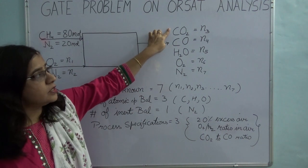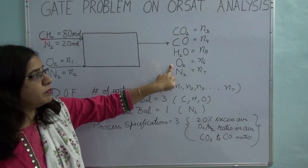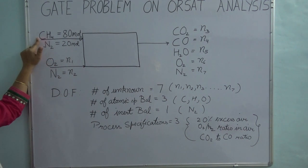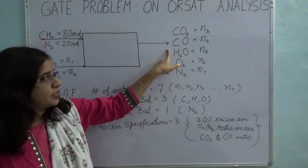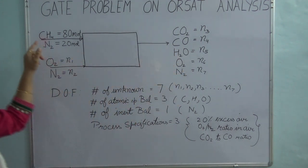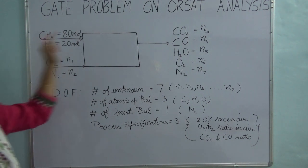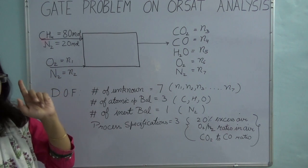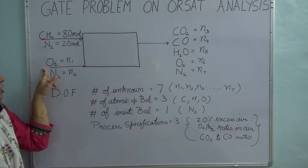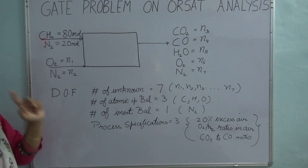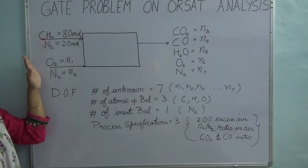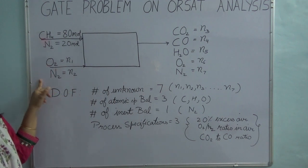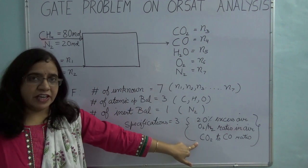The products of combustion are CO2, CO, H2O, and then unburnt oxygen and nitrogen. So methane is burning to give carbon dioxide as well as carbon monoxide. It is given that 80% of the combustible, that is 80% of the methane, burns to give carbon dioxide, and the remaining gives carbon monoxide. That is one process specification. The second process specification is that we are using 20% excess air. The third specification is that the O2 to N2 ratio in air is fixed. So I have three process specifications listed.